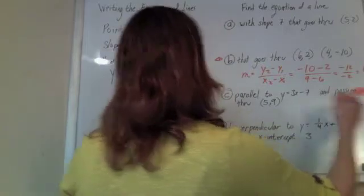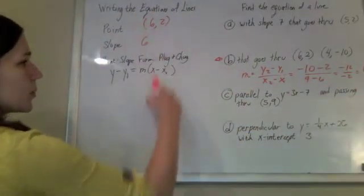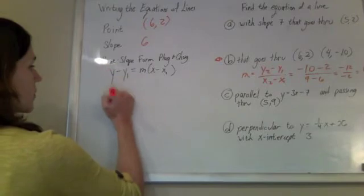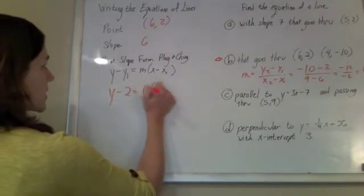So now, we have a point. We have a slope. Plug and chug them into point-slope form.